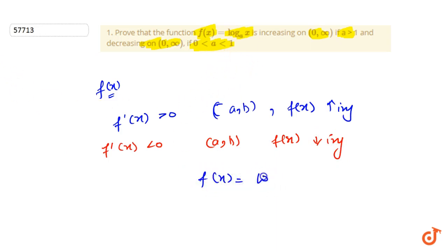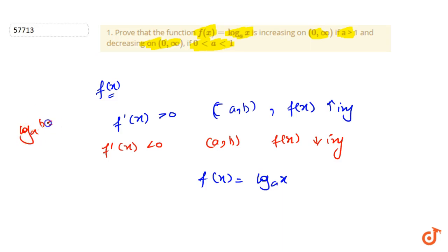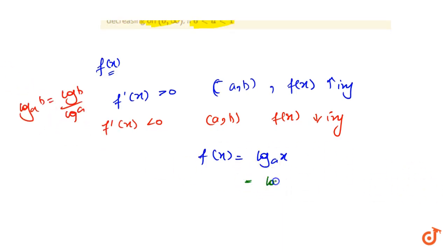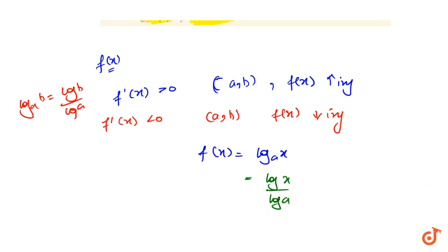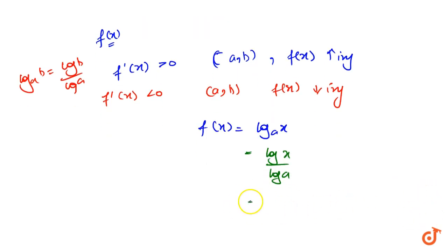f(x) = log_a(x). Now we know that we can write log_a(b) as log(b) / log(a). So here we can write log(x) / log(a). Now log(a) is a constant quantity, so we can write f(x) = (1/log(a)) · log(x).